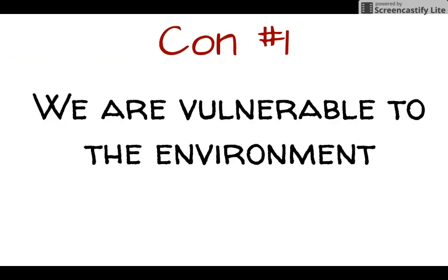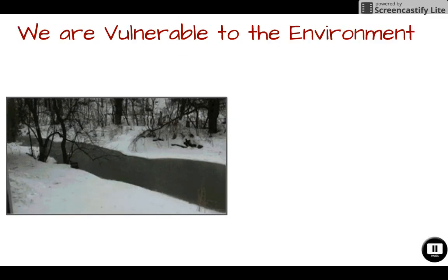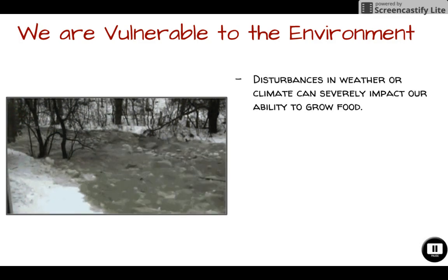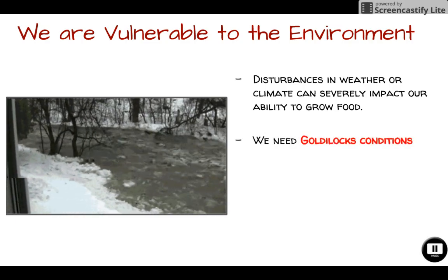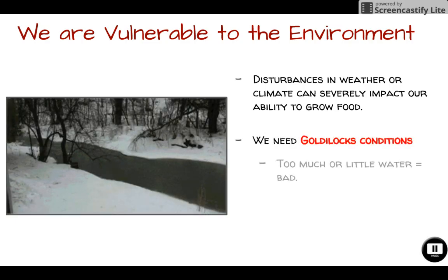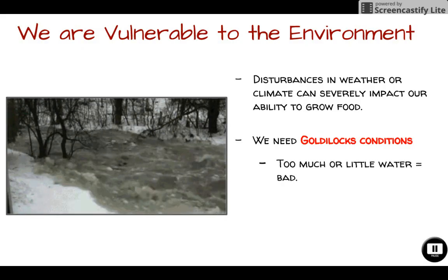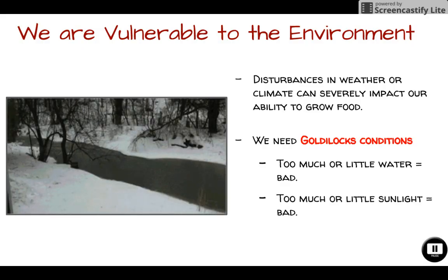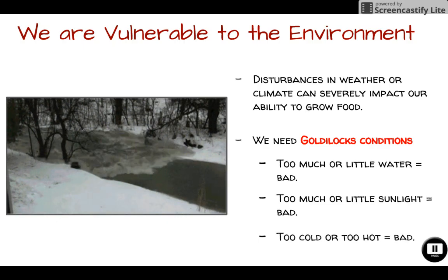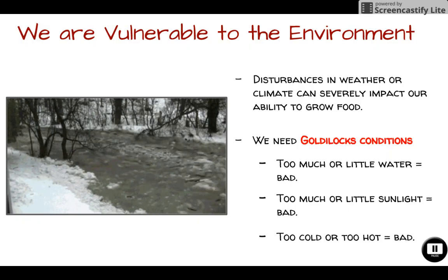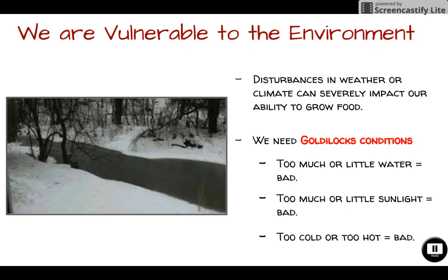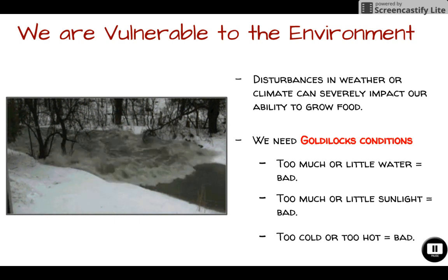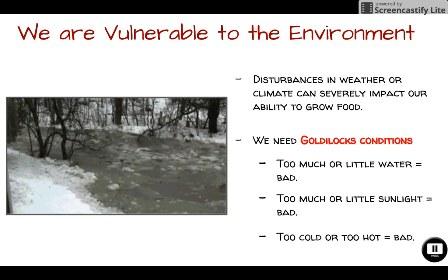Now let's look at some of the really terrible things we get from agriculture. One of the worst is that we are so susceptible to the environment. Minor or major disturbances can impact how much food we can grow. We need what I call Goldilocks conditions — if we get too much or too little water, too much or too little sunlight, or temperatures too hot or too cold, that's terrible for agriculture. We need perfect amounts of water, sunlight, and temperature to successfully grow food.